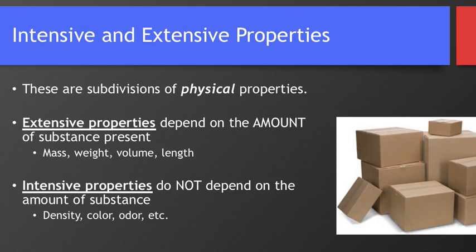Now let's look at intensive and extensive properties. These are like subdivisions of physical properties. These are like two different branches of physical properties. Extensive properties depend on the amount of substance, like mass, weight, volume, length. Extensive properties can change. So if I cut something in half, it might still be the same chemical makeup, but I only have half of it now.